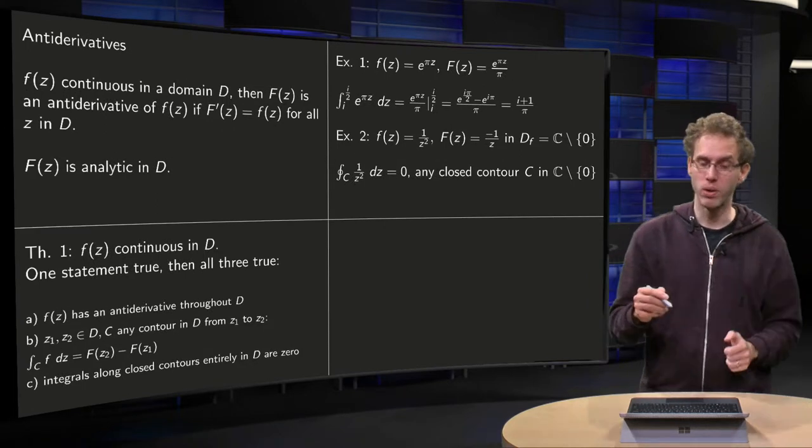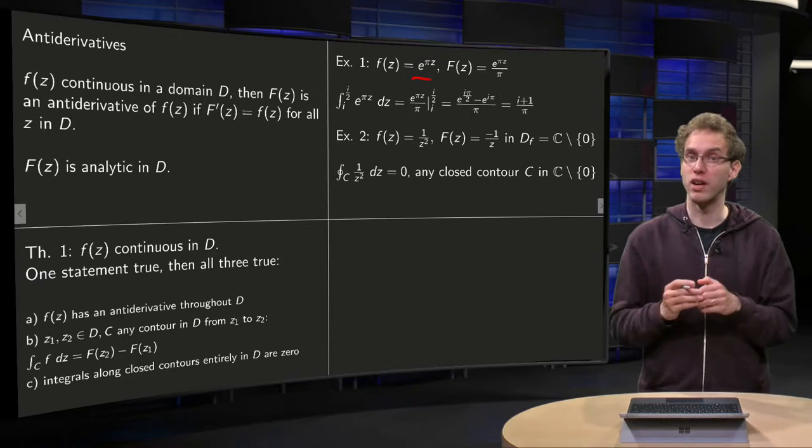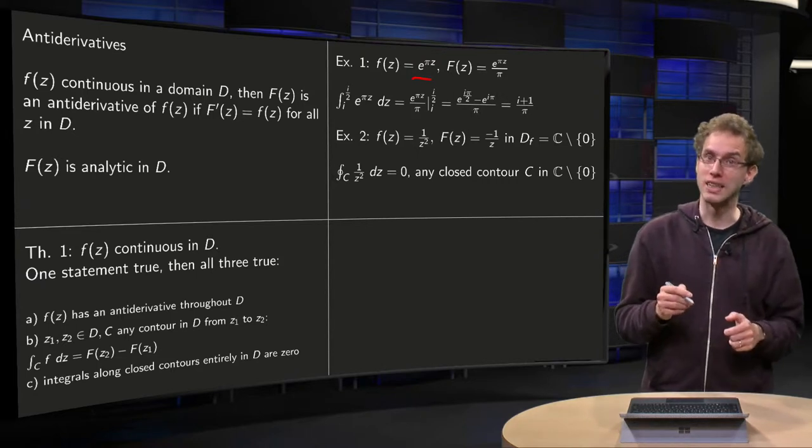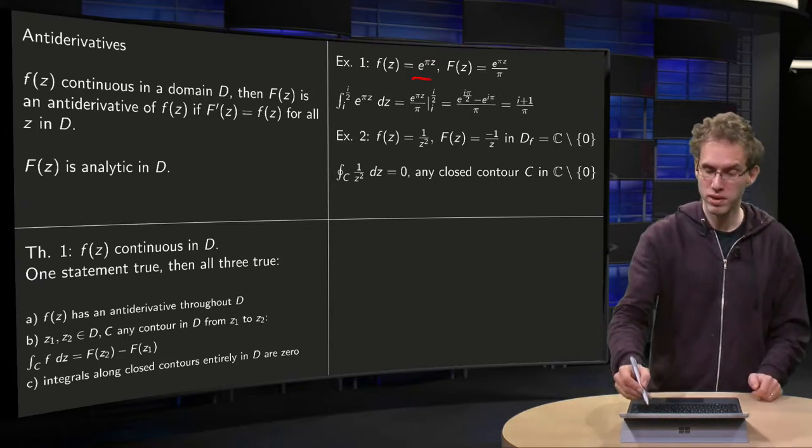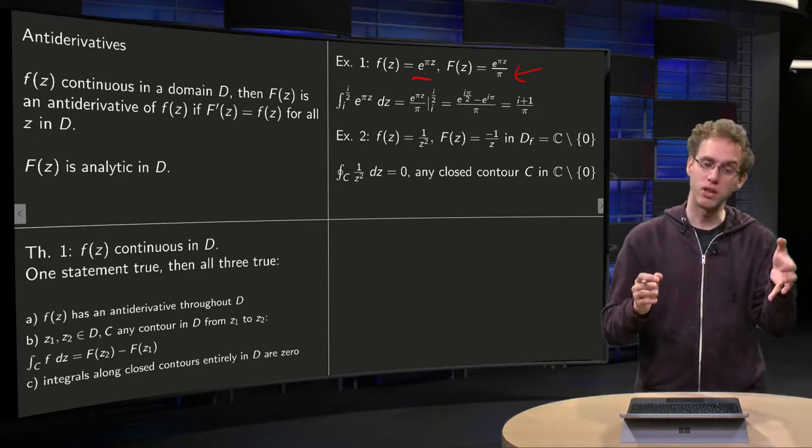So, how does it work? Here we have an example. We have f of z, small f of z equals e to the power pi z. Then we know an antiderivative, e to the power pi z over pi, because if you differentiate capital F, you get small f.